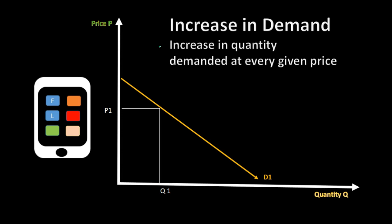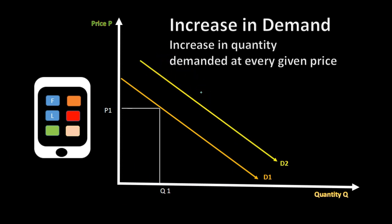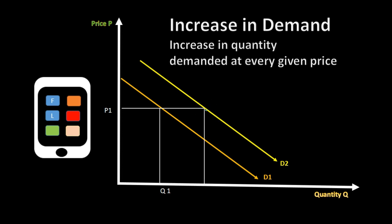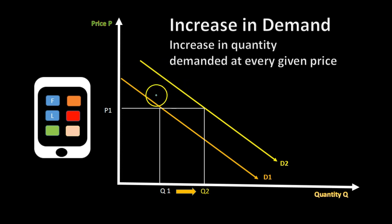We can think of things that would shift the demand curve out other than a change in price, causing the whole demand curve to shift out. What does that mean? At price P, we're now further out, meaning quantity goes up — price stays the same but quantity goes up. Something other than price had an effect on the quantity demanded. An increase in demand, that shift in the demand curve, means there's an increase in quantity demanded at every given price compared to before. That's the concept.